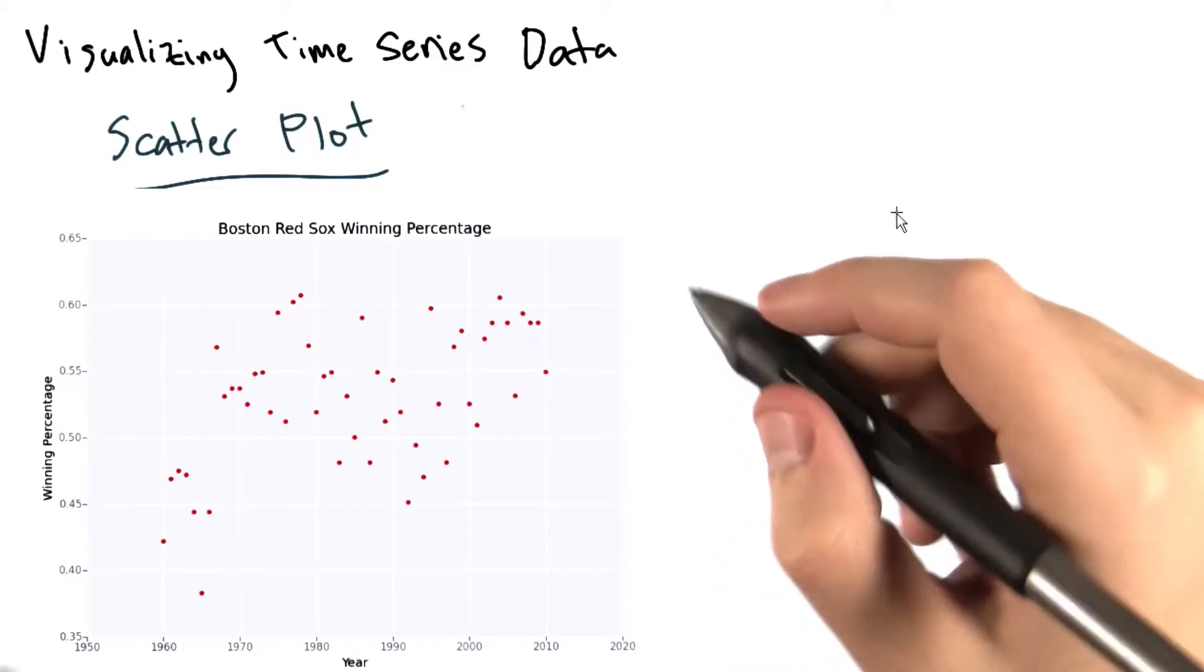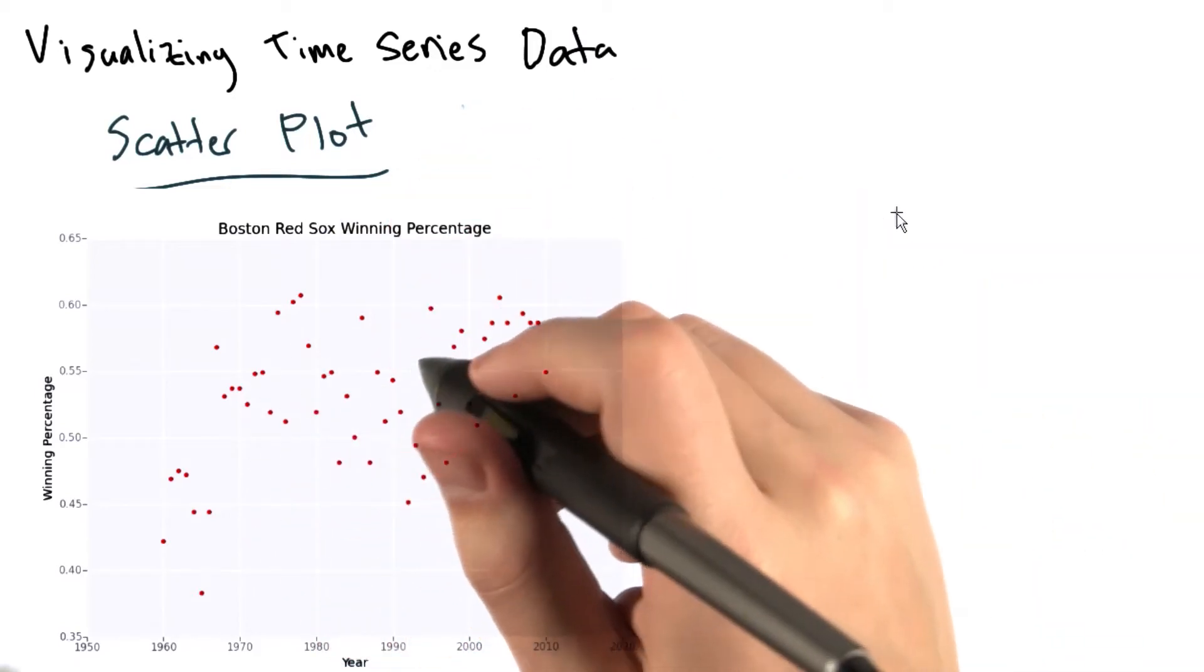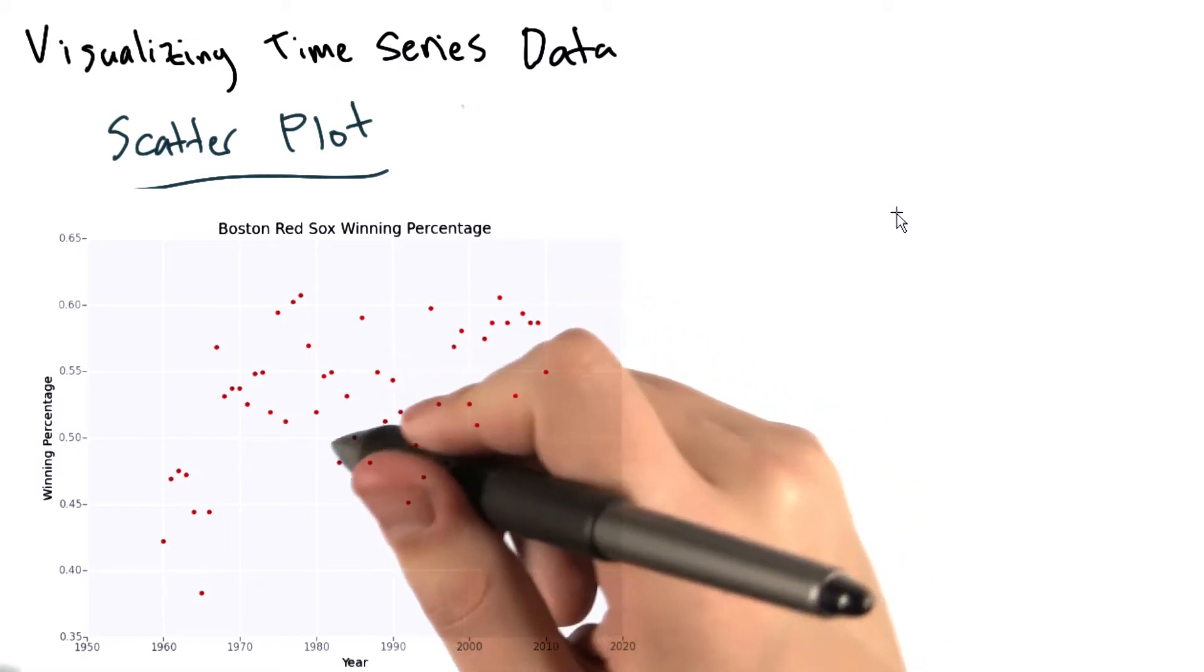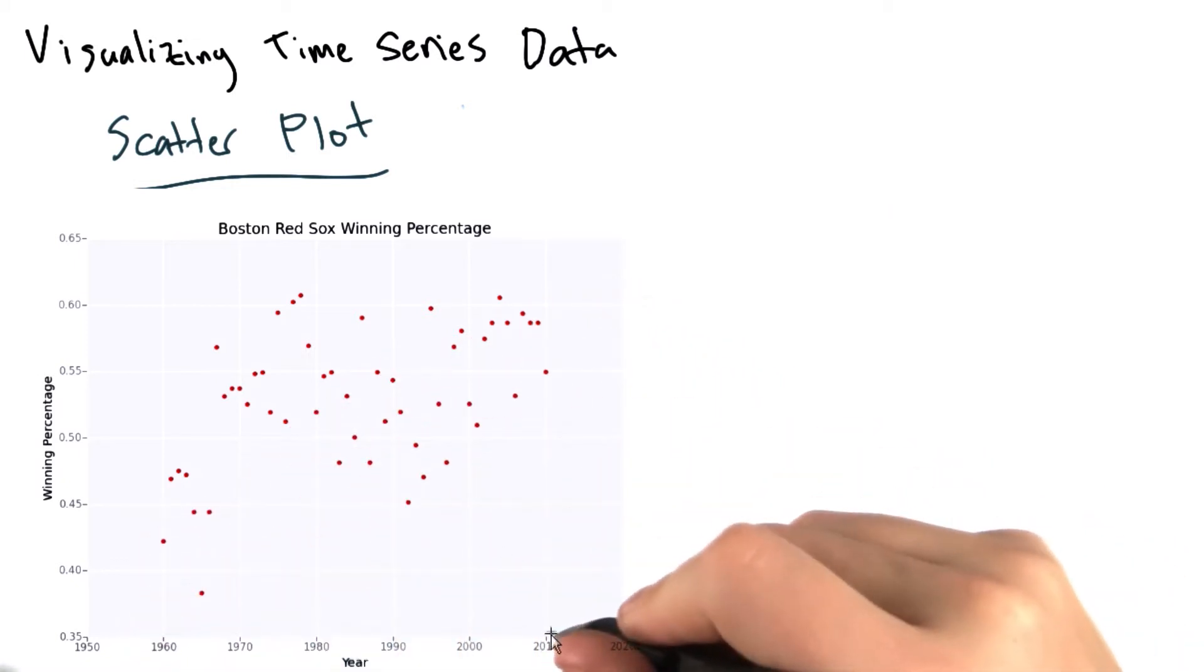Let's start with a simple scatter plot. Each dot in this chart represents the winning percentage of the Boston Red Sox in the year between 1960 and 2010.